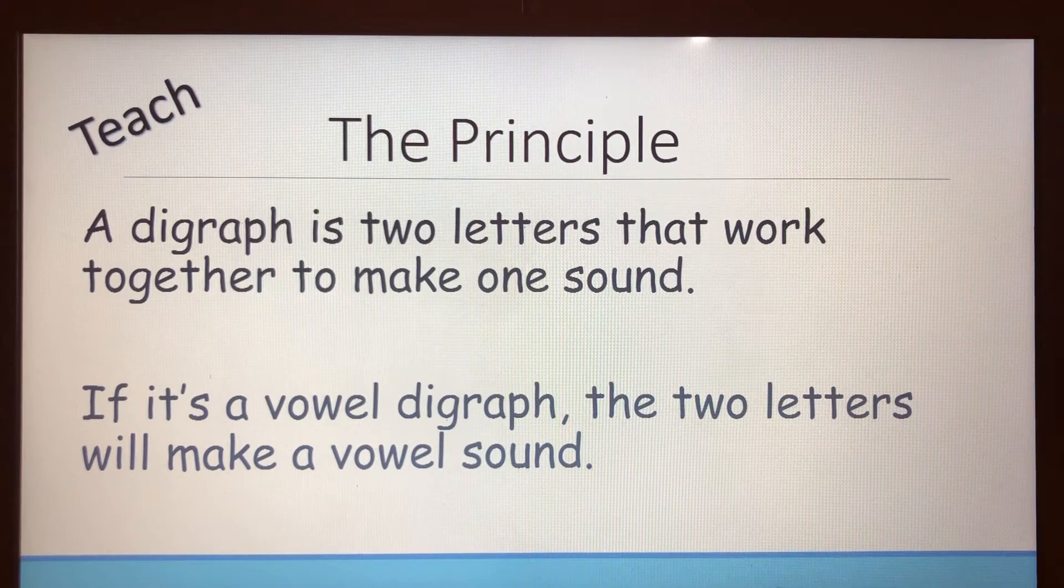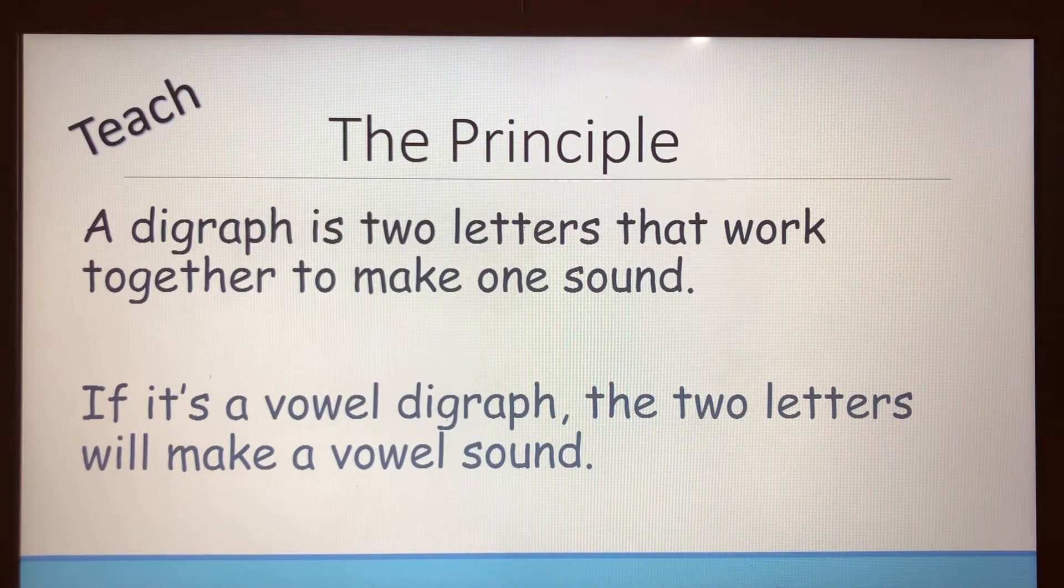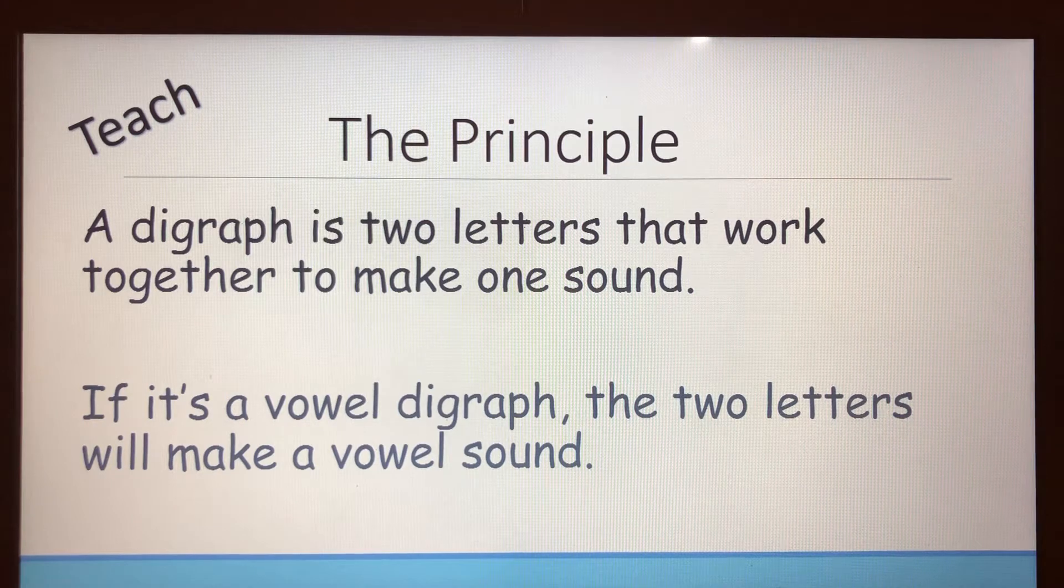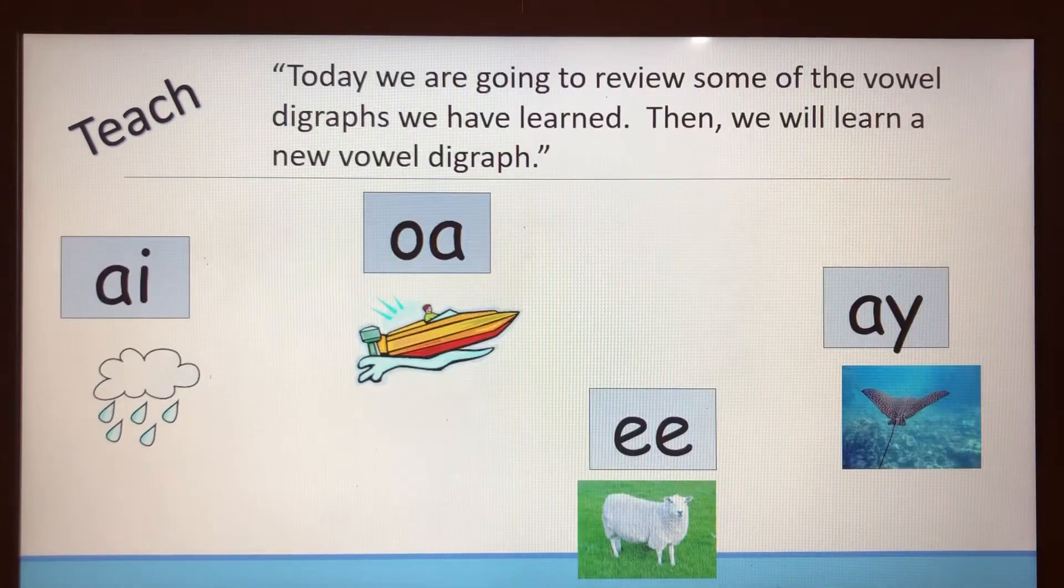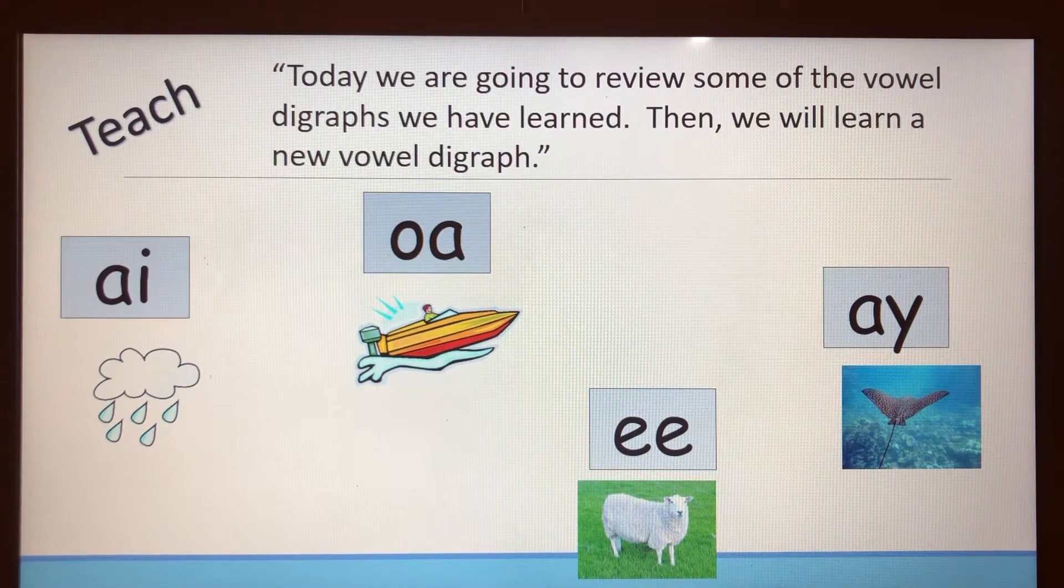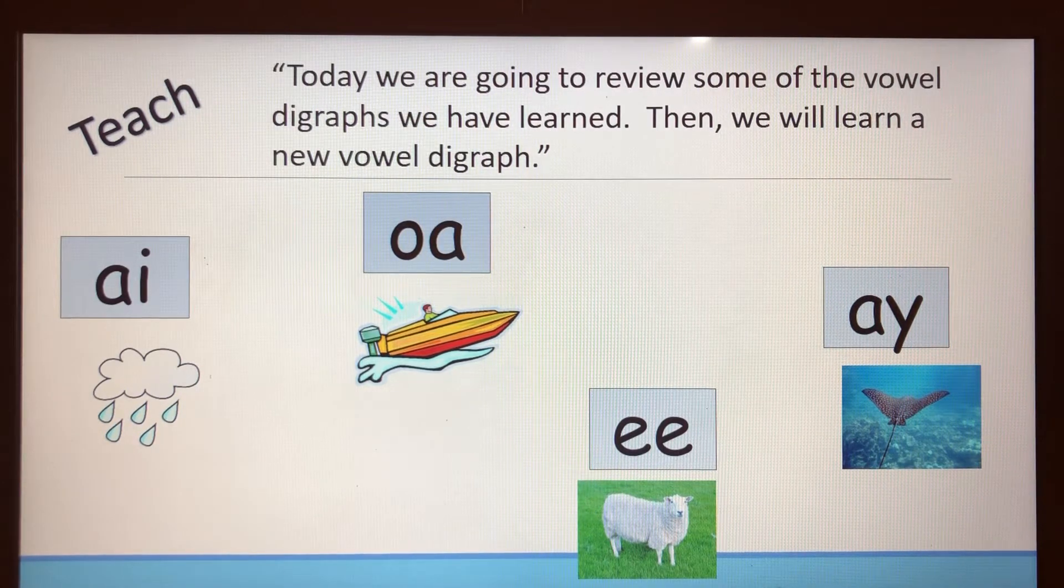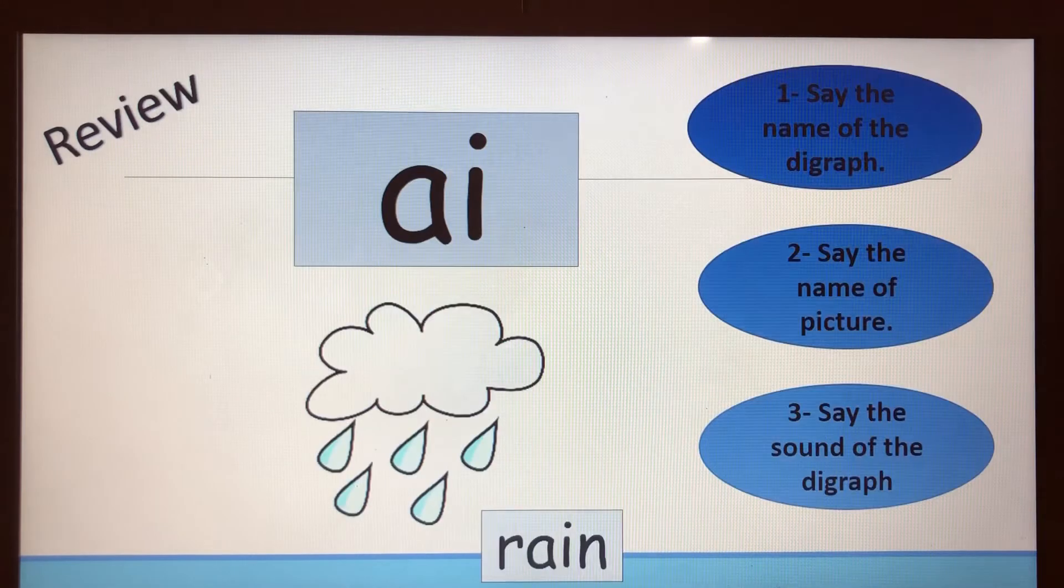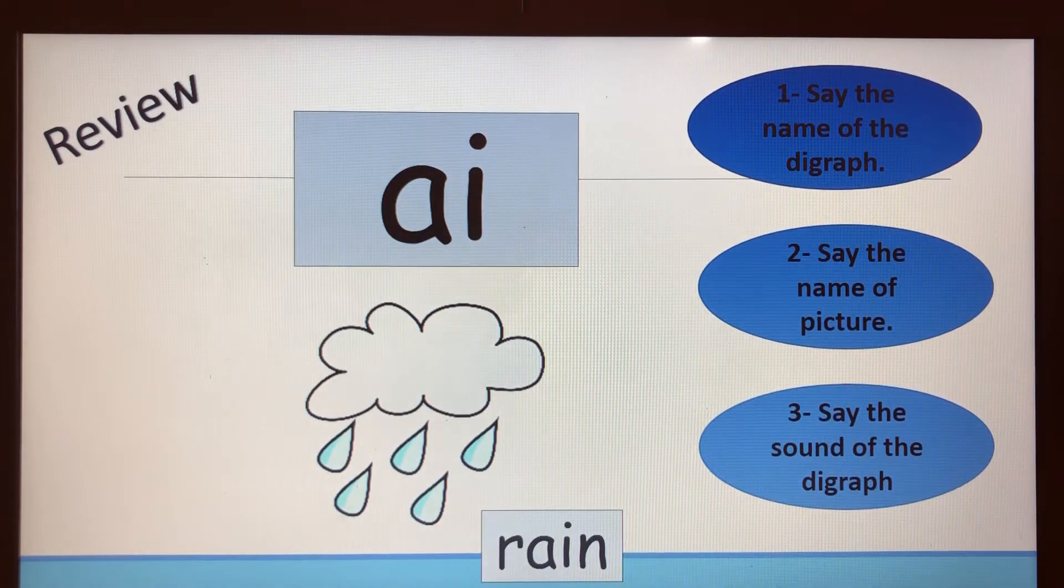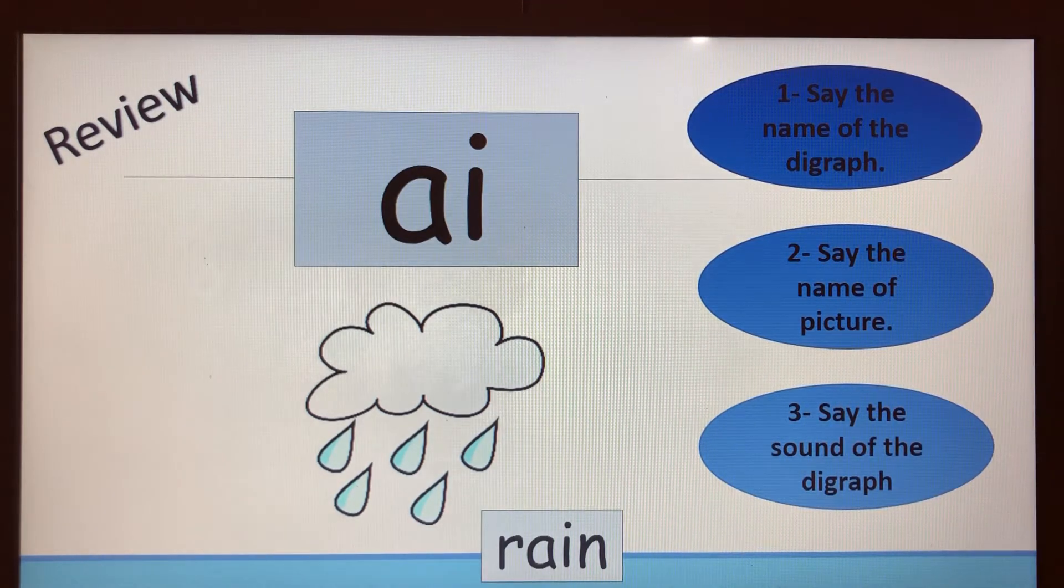Today's principle: a digraph is two letters that work together to make one sound. If it's a vowel digraph, the two letters will make a vowel sound. So we're going to review some of the vowel digraphs we've learned, and then we'll learn about a new vowel digraph.